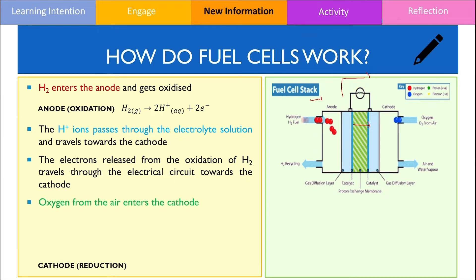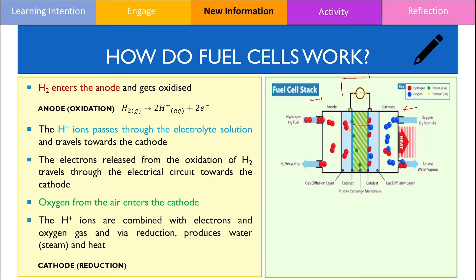On the opposite compartment, the oxygen molecules present in air enters the cathode, which is the site of reduction. At the cathode, the hydrogen ions gets reunited with the electrons it lost and together with the oxygen molecule reacts in a manner to produce water vapour and heat, which can be represented by the following half equation.